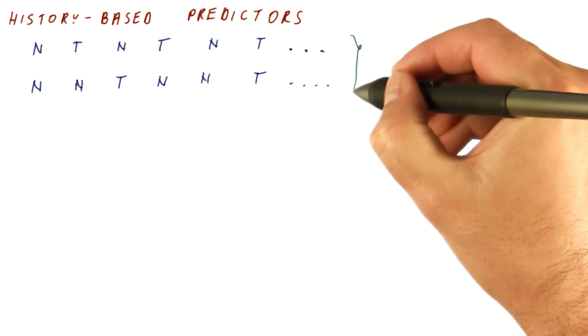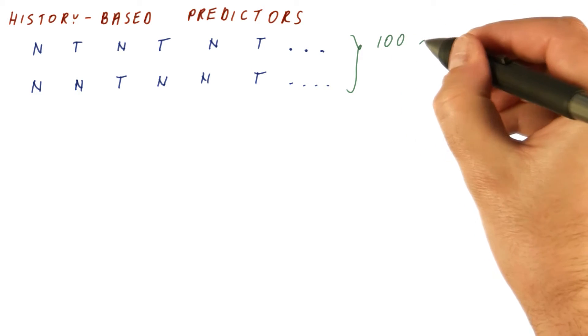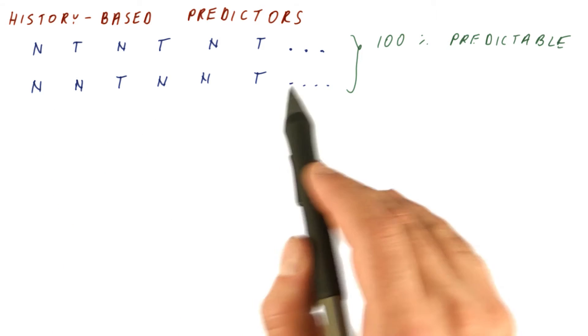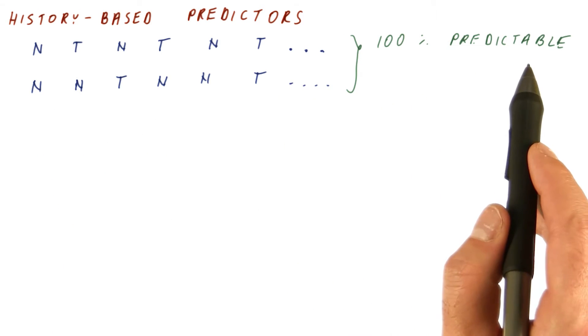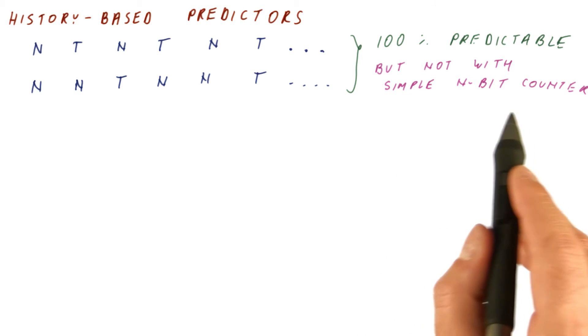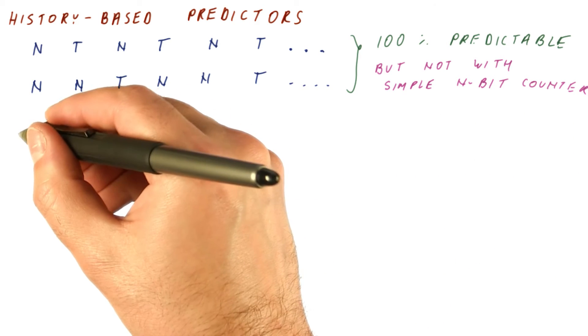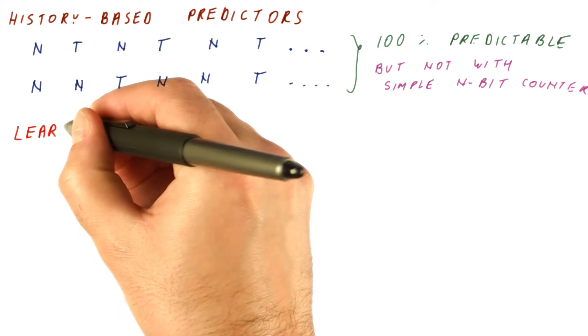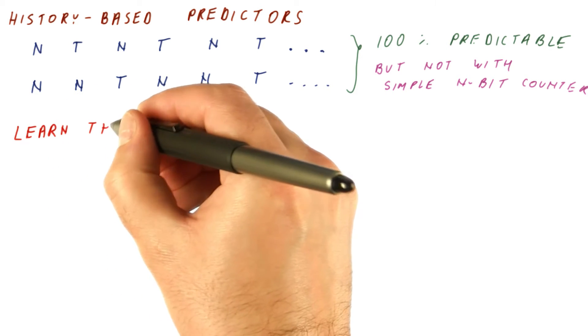It's important to know that these are really 100% predictable. These are repeating patterns. Once you figure out what the pattern is, the branch becomes 100% predictable. It's just that these branches are not predictable with simple n-bit counters. What we need is a predictor that somehow learns the pattern, really. And then it becomes a very accurate predictor.